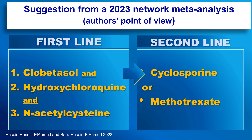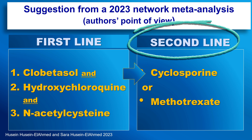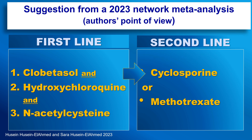We will all be interested to see how N-acetylcysteine performs in regards to possibly stopping disease progression. According to the authors, the second-line treatment should be cyclosporine or methotrexate, of course with folic acid.